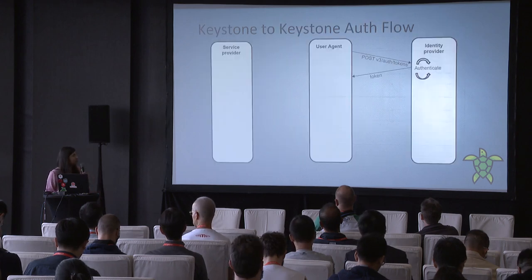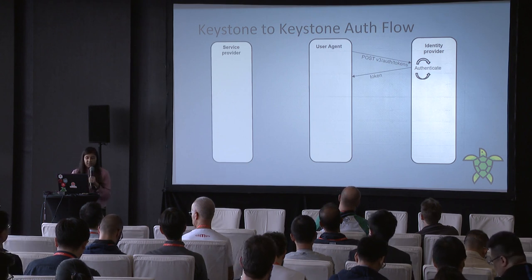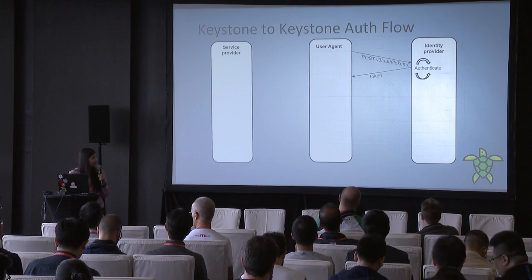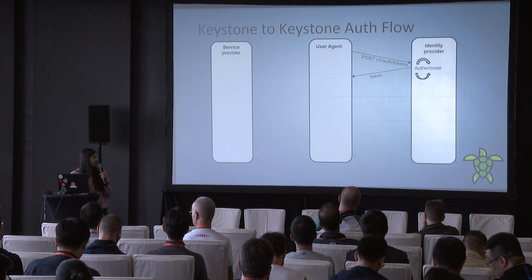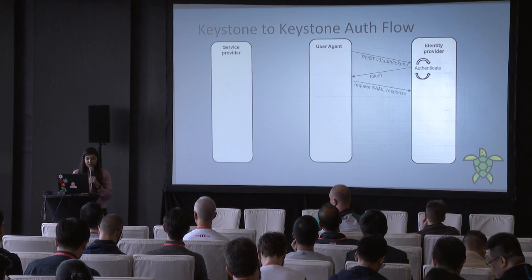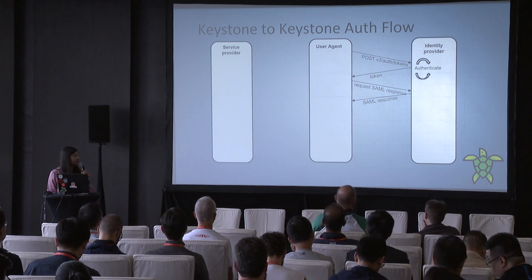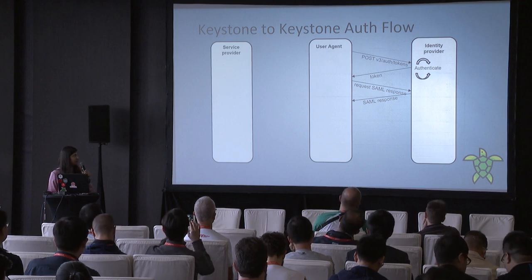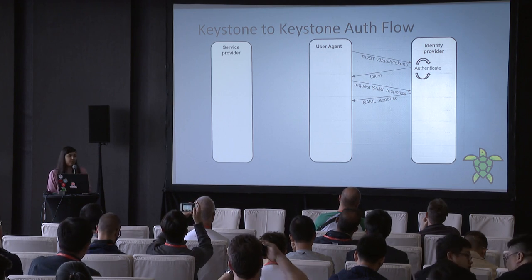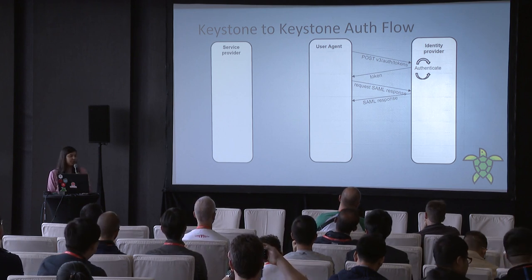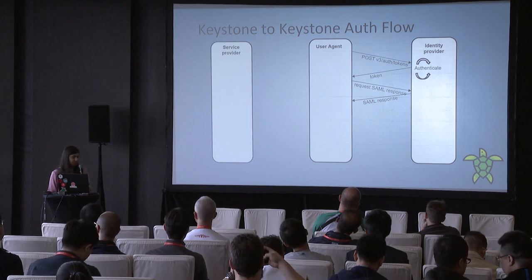In the Keystone-to-Keystone authentication flow, the user first sends a request to the identity provider. The IDP authenticates the user and gives a token to the user agent. Through that token, the user can request the SAML response from the identity provider. The SAML response is then generated and returned to the user.